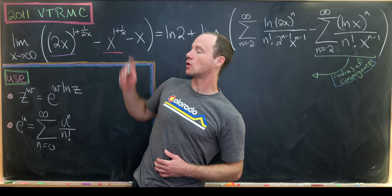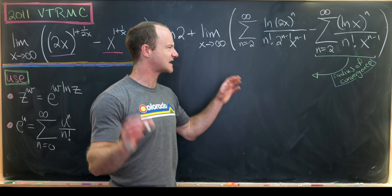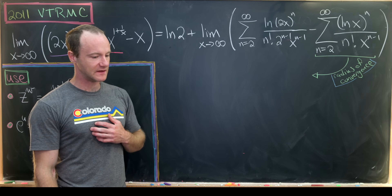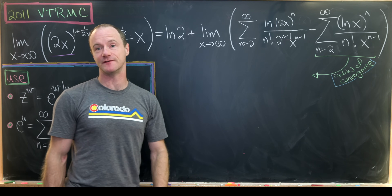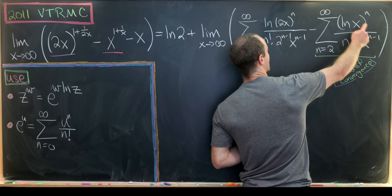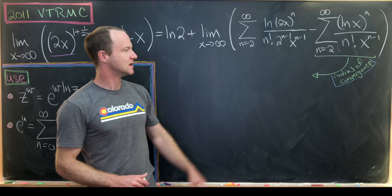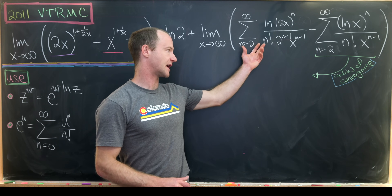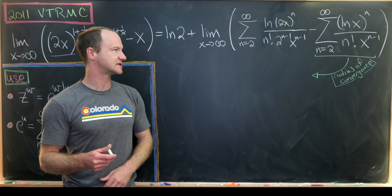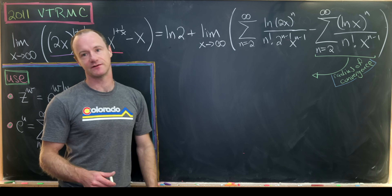In the last board, we determined that our goal limit equals natural log of 2 plus the limit as x goes to infinity of these remainder terms. Now I'll motivate bringing this limit inside the sums by calculating the radius of convergence of these series. In parallel you can calculate the radius of convergence of the first series; you'll see the radius of convergence is infinite, thus allowing us to bring the limit inside the sum.